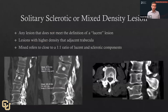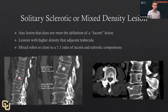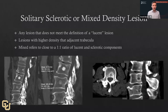In contrast to lucent lesions are the solitary sclerotic or mixed density lesions — officially defined as any lesion that doesn't meet the definition of a lucent lesion. Sclerotic lesions tend to have higher density than adjacent trabecula. Mixed lesions refer to about a 50-50 ratio of both lucent and sclerotic components, as seen here with these centrally lucent and peripherally sclerotic lesions. If a lesion is much more lucent or much more sclerotic and nowhere near 50-50, it falls into the solitary lucent or sclerotic categories.